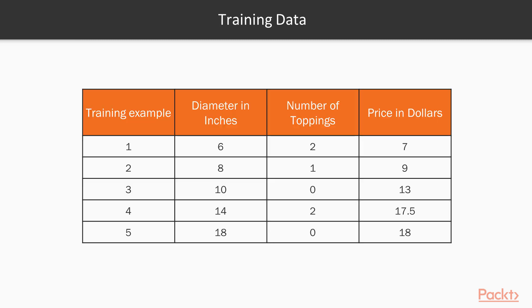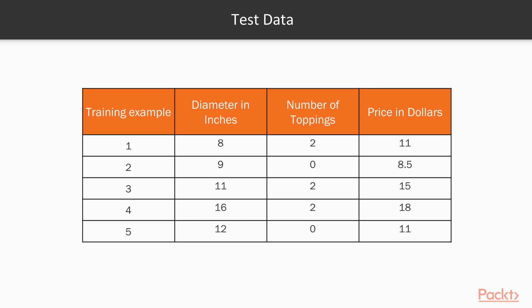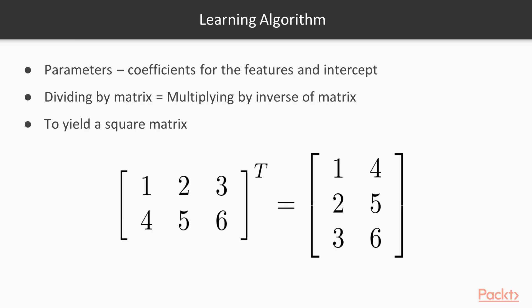Let's update our pizza training data to include the number of toppings. We must also update our test data to include the second explanatory variable as shown here. Our learning algorithm must estimate the values of three parameters: the coefficients for the two features and the intercept term.